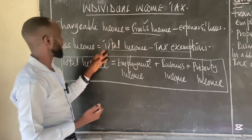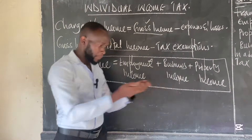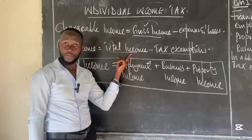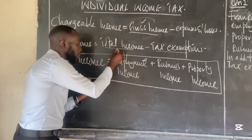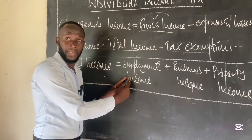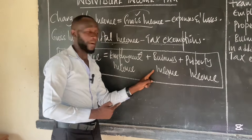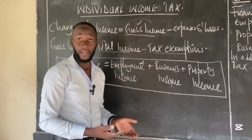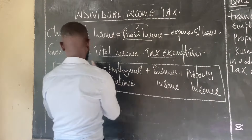Chargeable income is the gross income minus all expenditures incurred in the process of earning that income. Gross income is total incomes minus total exemptions. The total incomes are gotten from three major sources according to the Income Tax Act: employment income, business income, and property income. The sum of the three gives us what we call total income, and from that we derive gross income.